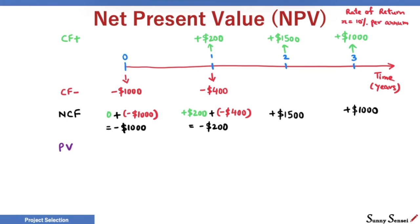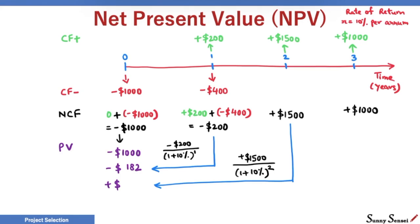Our net cash flow at time 0 is minus $1000. The present value is also minus $1000. For year 1, the present value will be minus $182. I have rounded off the numbers to the nearest integer. For year 2, the present value of net cash flow is plus $1240.